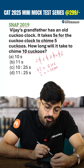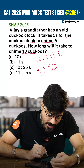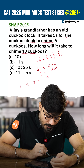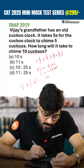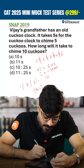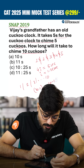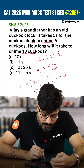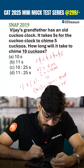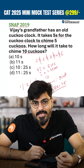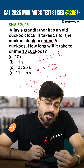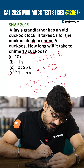Now, how long will it take to chime 10 cuckoos? If it has to chime 10 cuckoos — writing 1, 2, 3, up to 10 — for 10 cuckoos, n minus 1 intervals are required, which is 10 minus 1 = 9 intervals. Knowing 1 interval is 1.25 seconds, it is 9 × 1.25 = 11.25 seconds. The answer is D.